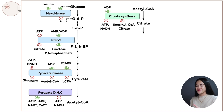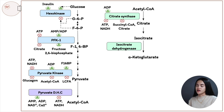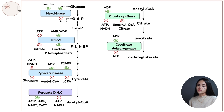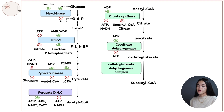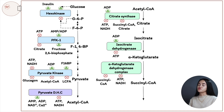Citrate then turns into isocitrate, then alpha-ketoglutarate. The next key enzyme here is isocitrate dehydrogenase, which is stimulated by ADP and inhibited by ATP. From alpha-ketoglutarate, it's then converted to succinyl-CoA by the alpha-ketoglutarate dehydrogenase complex, and this enzyme is inhibited by succinyl-CoA, ATP, and NADH. Then more reactions occur and we produce oxaloacetate, which can then enter the cycle again.